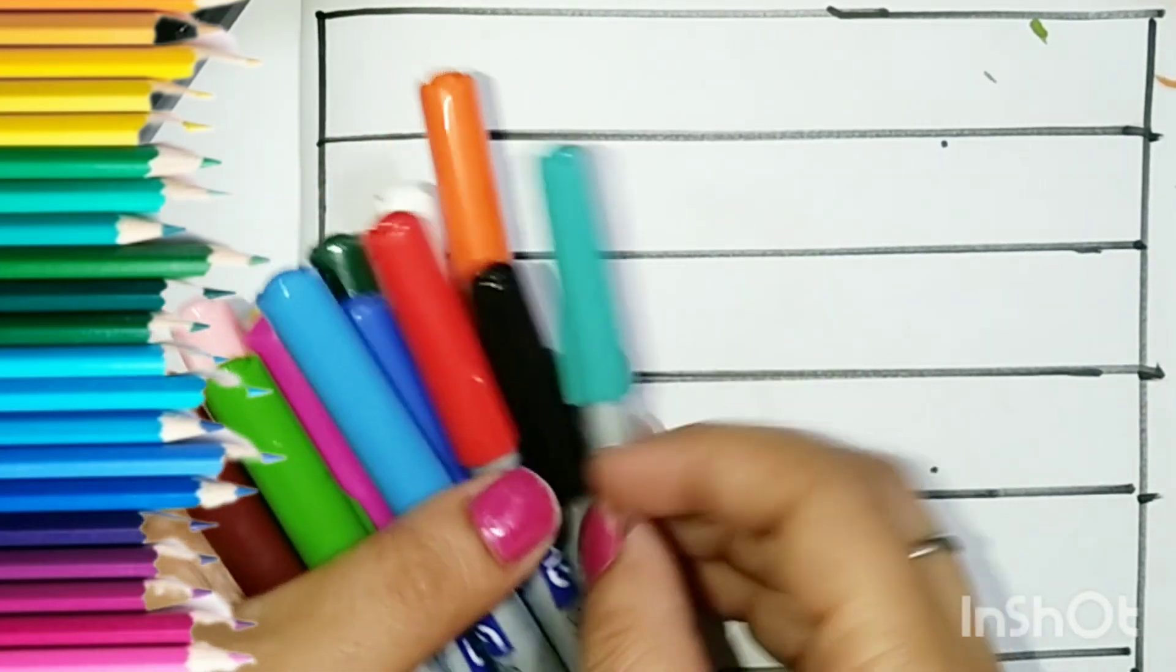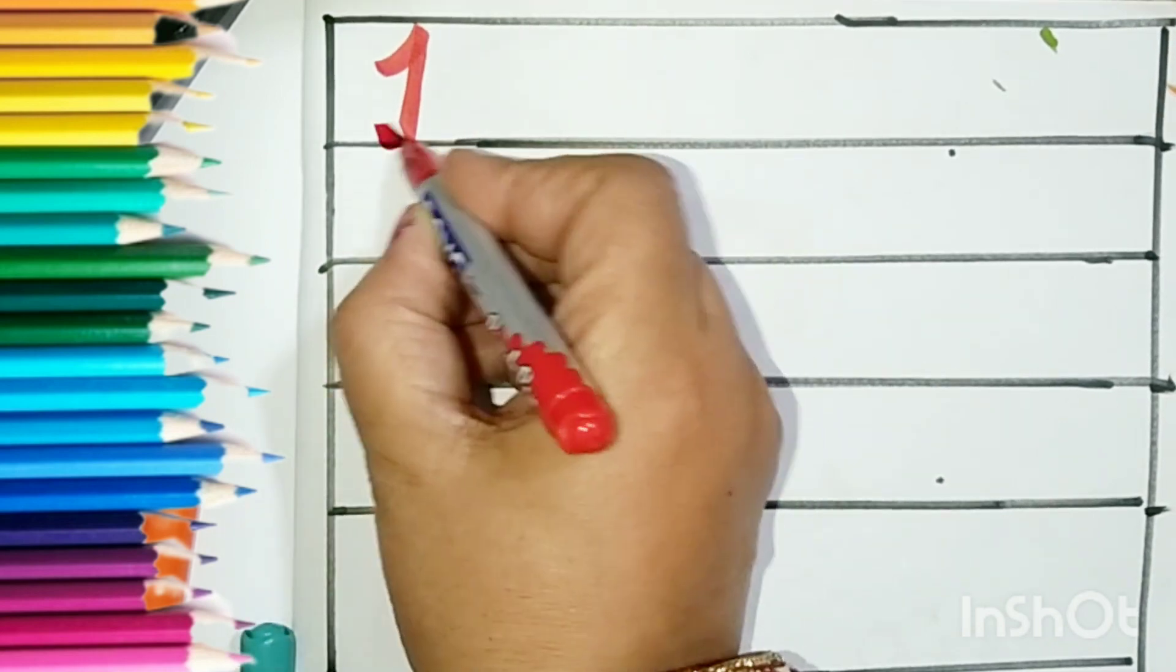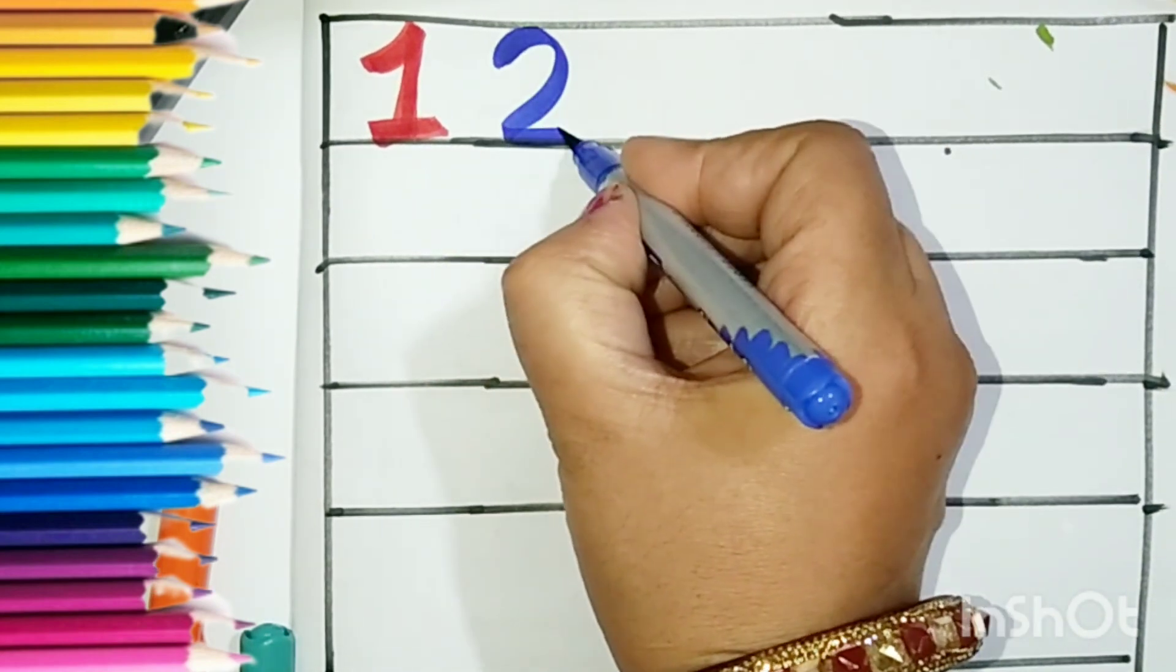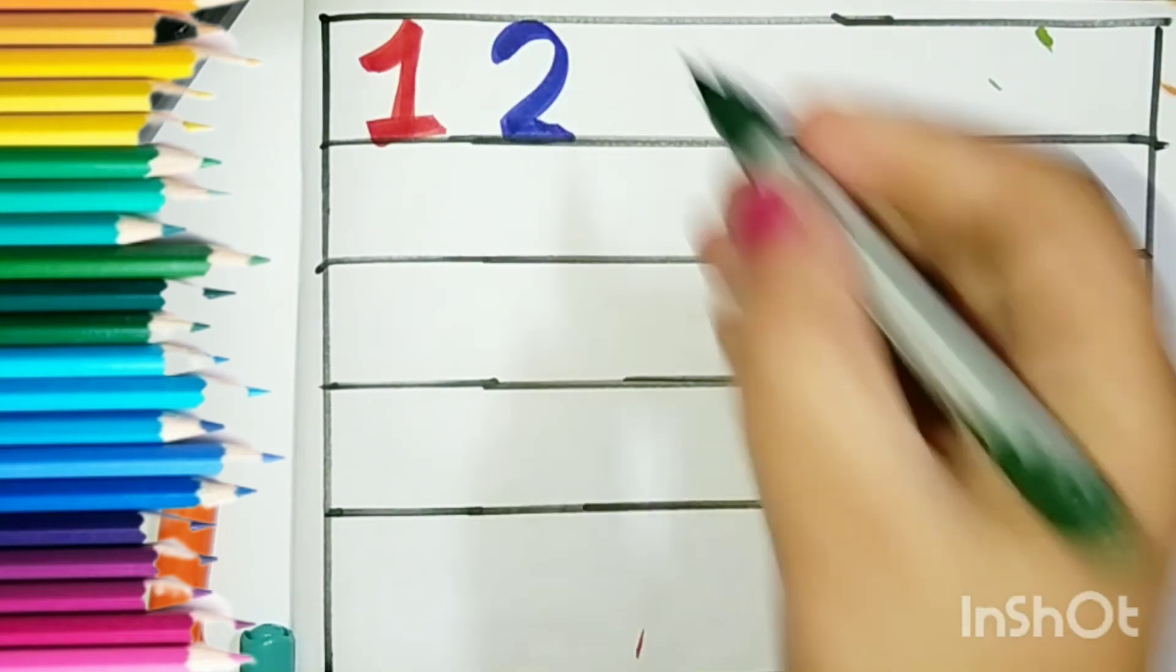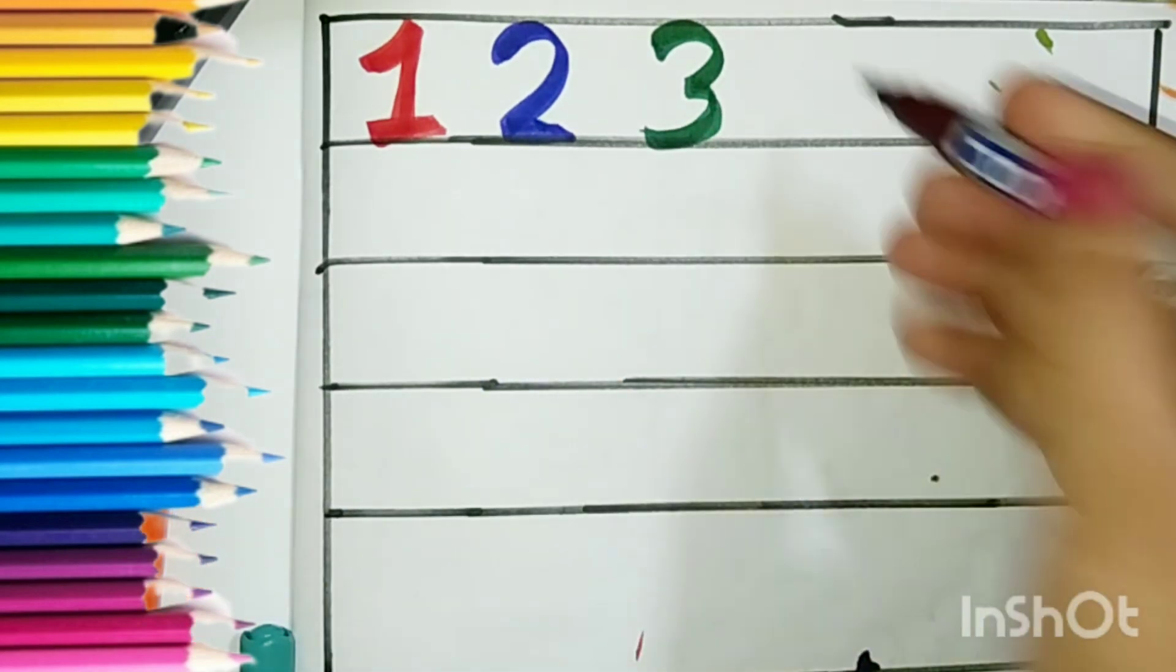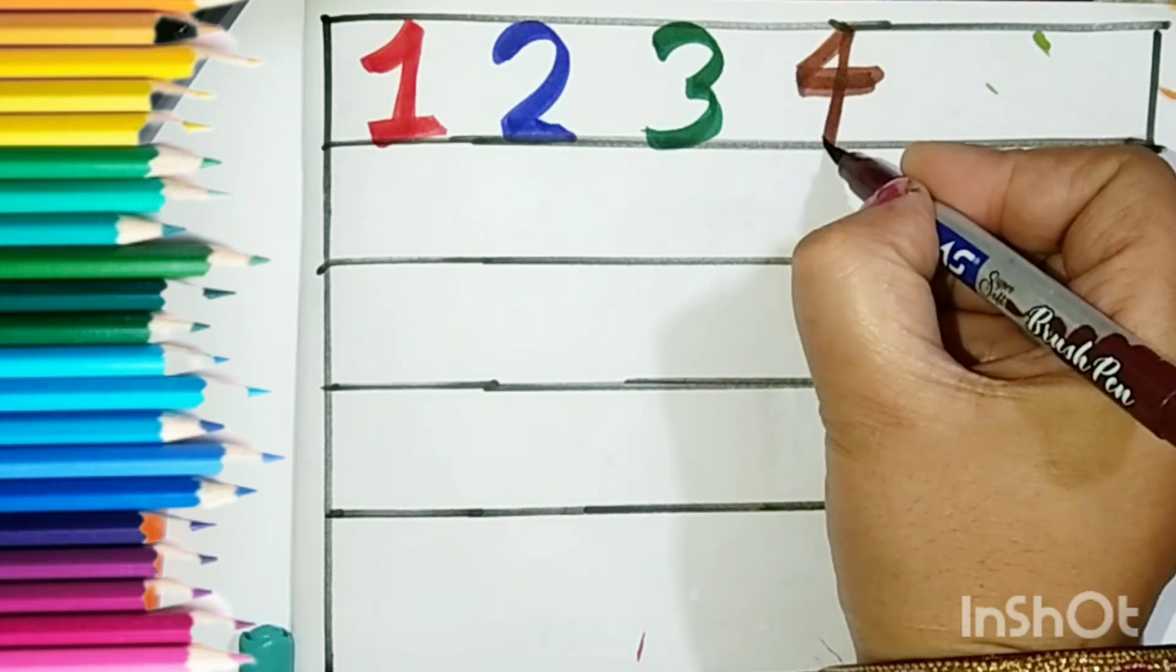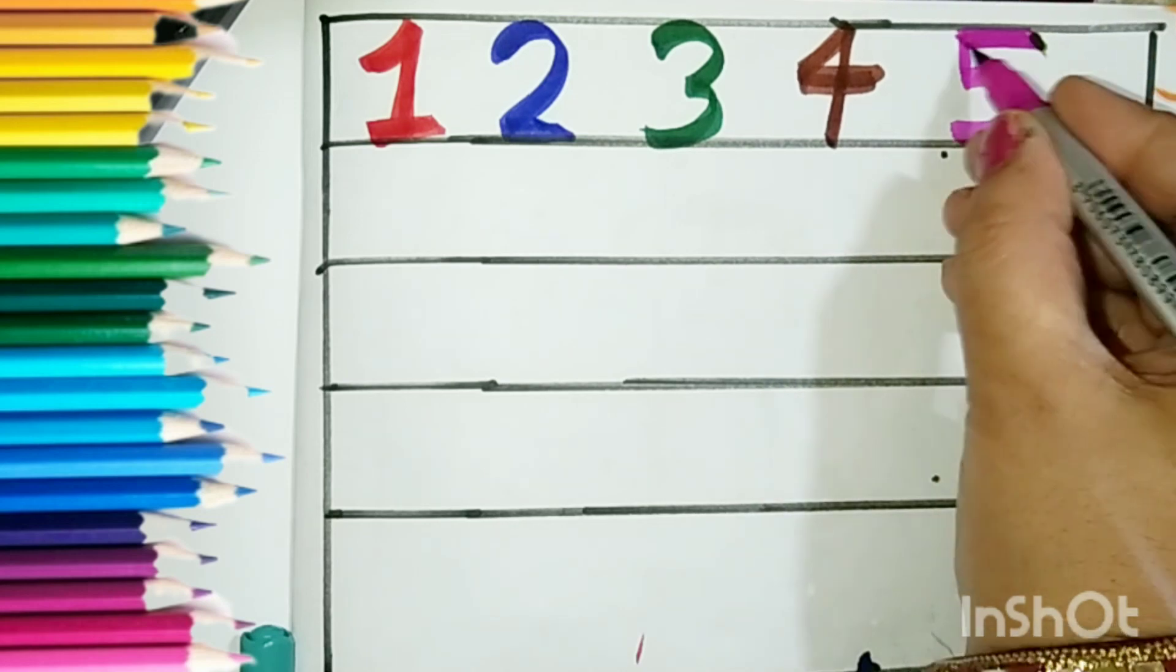Now let us start the counting. 1, 1, 2, 2, 3, 3, 4, 4 and 5, 5.